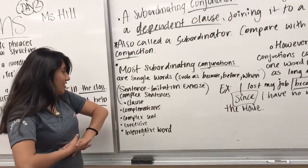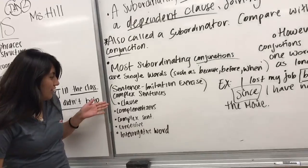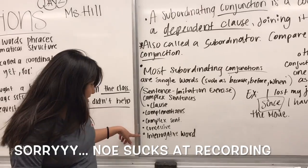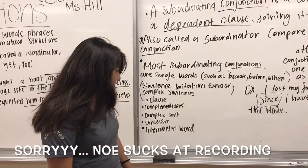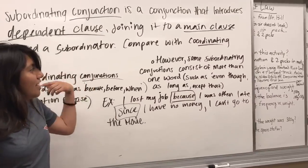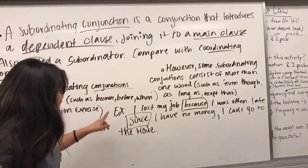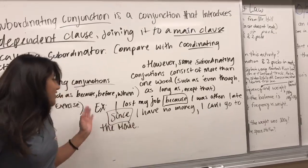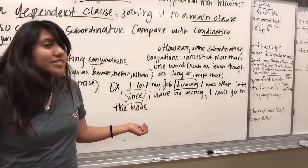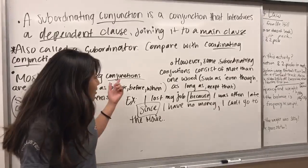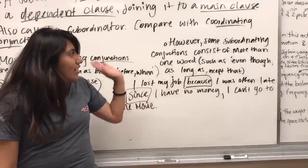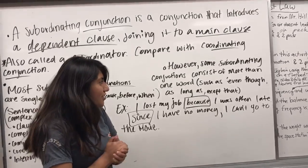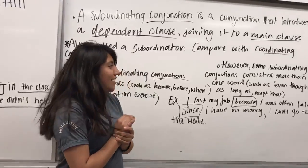Subordinating conjunctions connect complex sentences — a main clause with a dependent clause. Examples: 'I lost my job because I was late.' 'Since I had no money, I can't go to the movie.' The conjunctions used are 'because' and 'since.' However, some subordinating conjunctions consist of more than one word, such as 'even though,' 'as long as,' and 'except that.'